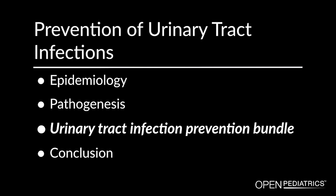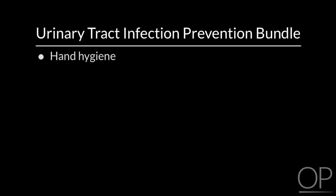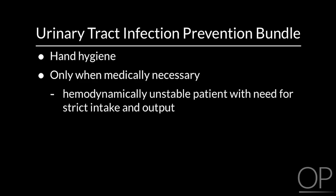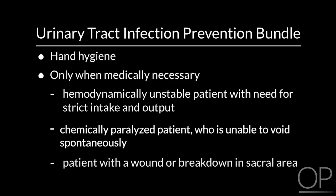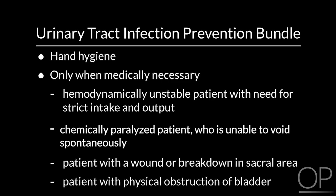Urinary tract infection prevention bundle. At Children's Hospital Boston, our urinary tract infection prevention bundle includes the following components. Hand hygiene, which is the basis of all infection prevention initiatives. Inserting catheters only when medically necessary, as defined by the hemodynamically unstable patient with the need for strict intake and output, the chemically paralyzed patient who is unable to void spontaneously, the patient with a wound or breakdown in the sacral area, or the patient with physical obstruction of the bladder.